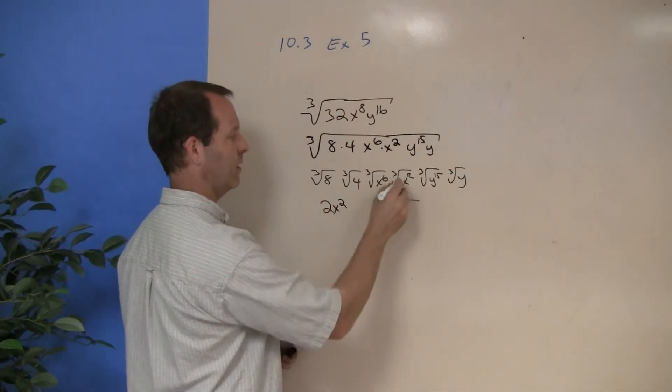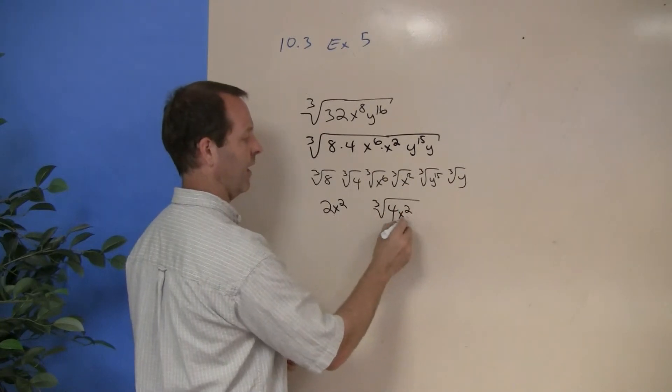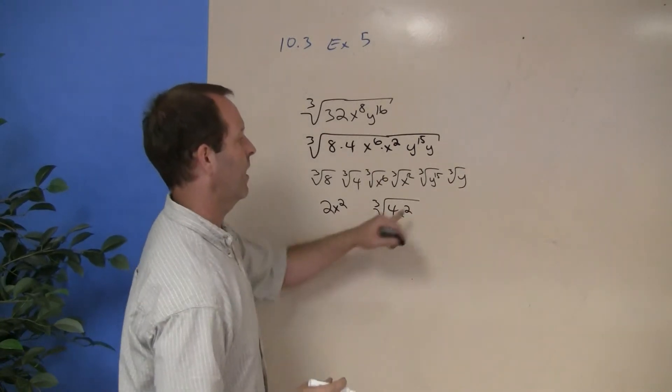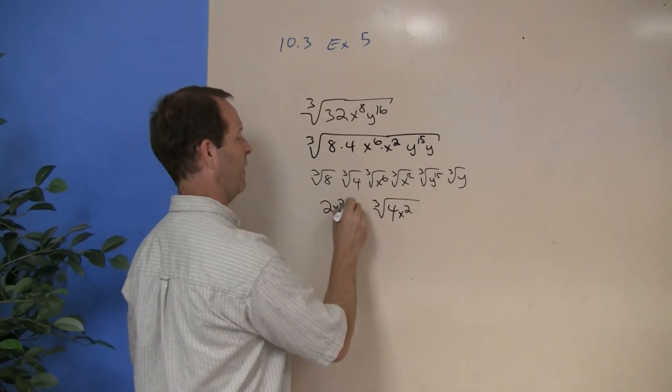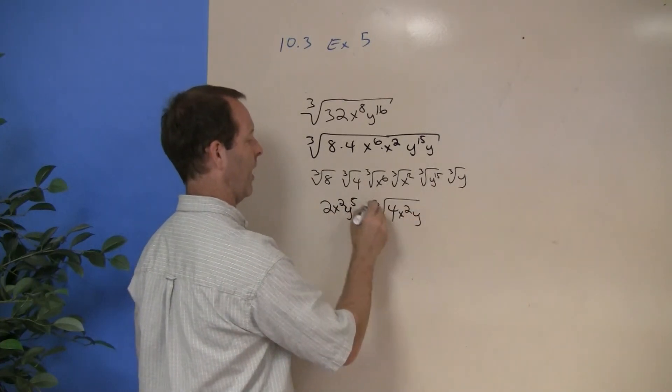The cube root of x to the 6th is x squared with an x squared left inside. The cube root of y to the 15th is y to the 5th with a cube root of y in the middle.